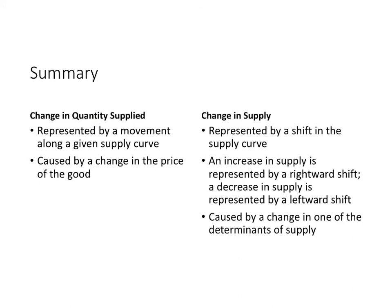As a summary: a change in quantity supplied is represented by a movement along a given supply curve, and it is caused by a change in the price of the good. A change in supply is represented by a shift in the supply curve — a rightward shift for an increase, a leftward shift for a decrease — and it is caused by a change in one of the determinants of supply, which will be discussed in other videos.